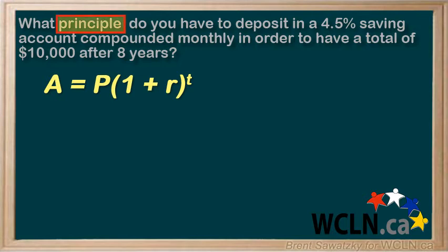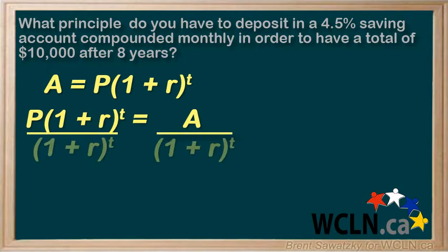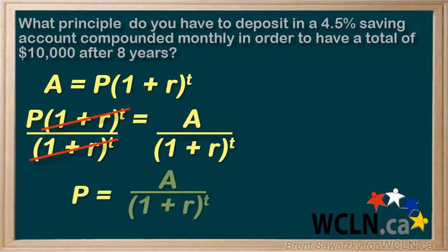We're solving for the principal in this case — we're asked what principal do you need. So let's rearrange for the principal. To do so, we'll divide both sides by 1 plus R to the T, that cancels out, and we're left with P equals A over 1 plus R to the T.